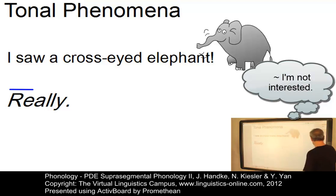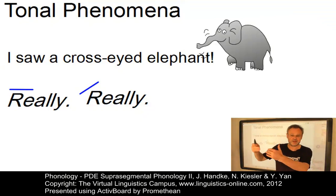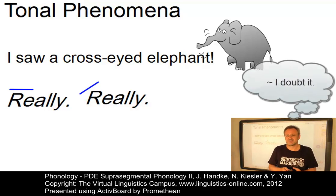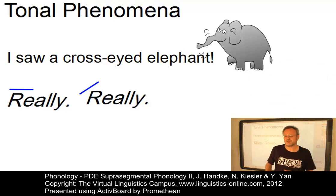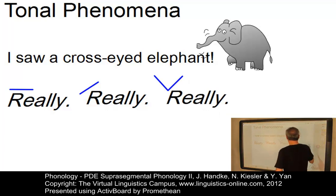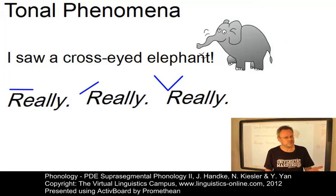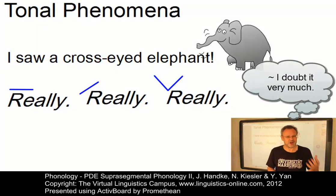If, by contrast, the nucleus is associated with a rising tone and the answer is 'really?', then you might want to show that you are in doubt about what someone said to you. And this sort of doubt can even be increased if you use a contour tone, which involves a falling element first and then a rise — something like 'really?' — which would involve a high degree of doubt.